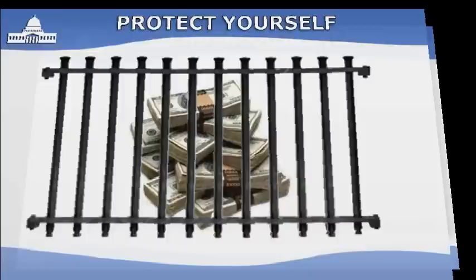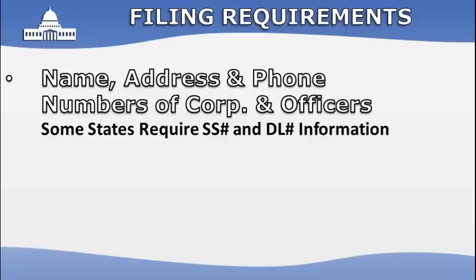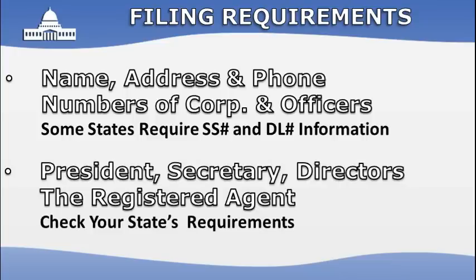For a corporation filing, at a minimum in most states you'll need to know the name, address, and phone numbers of the corporation and officers. Some states may also require social security and driver's license information. You'll need to designate a president, secretary, directors, and registered agent. The minimum requirement is a president and secretary, and in most states they can be the same person. Nevada also requires a treasurer and a director, which can be the same person as the president and secretary.